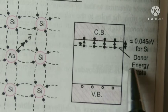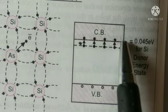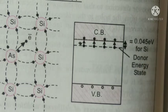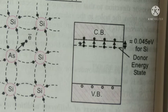And in case of germanium, this donor energy level lies at 0.01 electron volts.